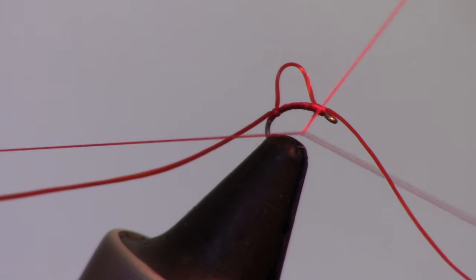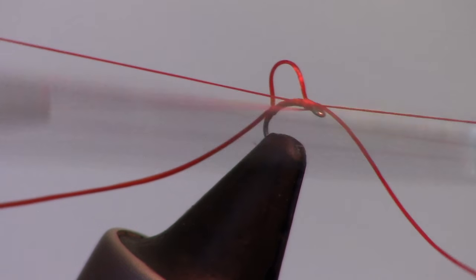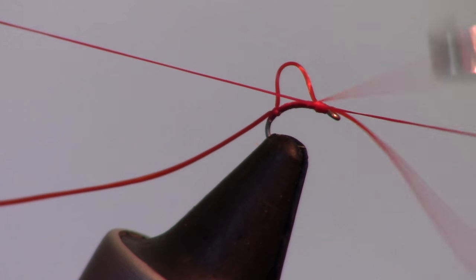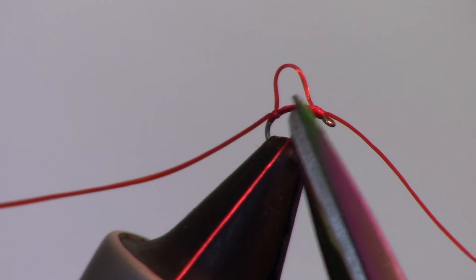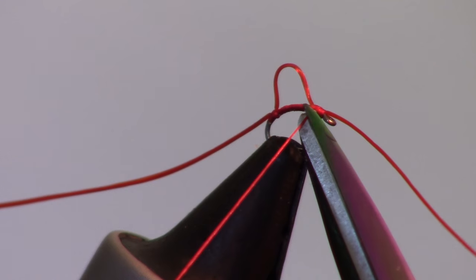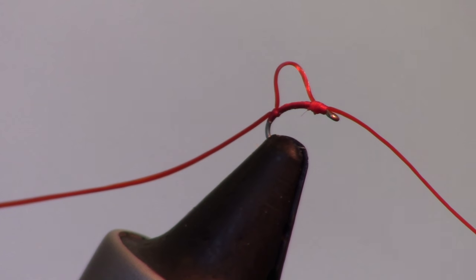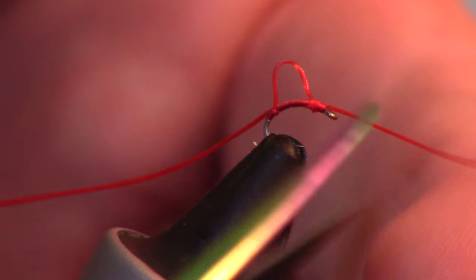Then whip finish your fly. Now you can trim the rubber leg material to your preferred length.